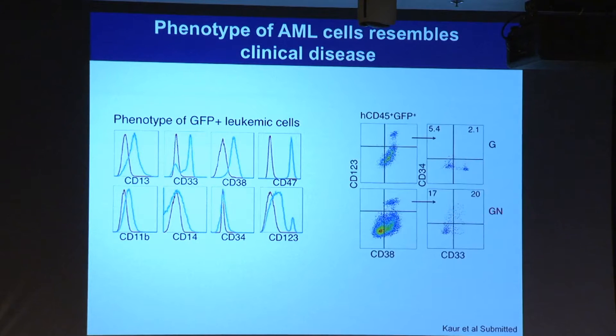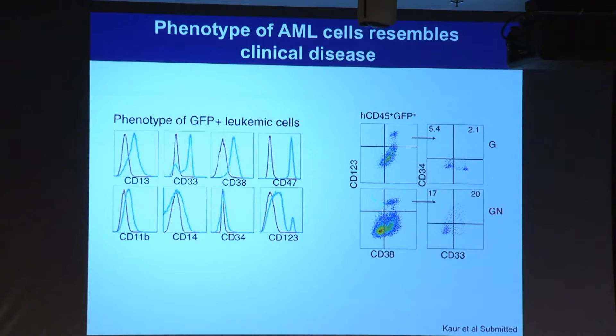We extensively phenotyped the tumor cells and found they have a similar phenotype to AML from patients. We also performed genome-wide transcriptional analysis, showing they are also very similar to patient AML. In addition, in these mice we can also generate leukemia stem cells.